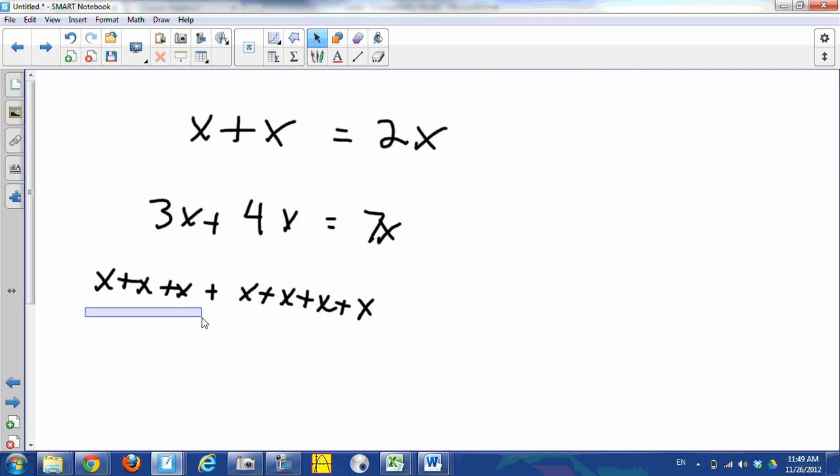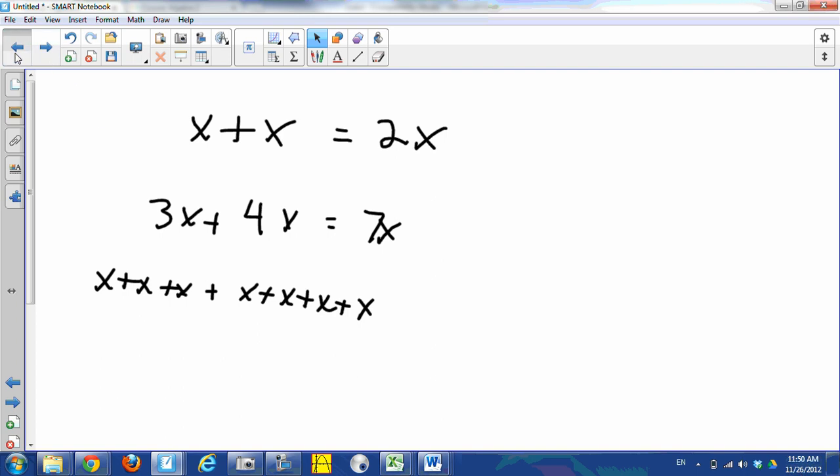They're all the same, they're all x's—that's 7x. That's an example of combining like terms. And you can't combine x and x² because they're not like terms. You can't combine x and x².